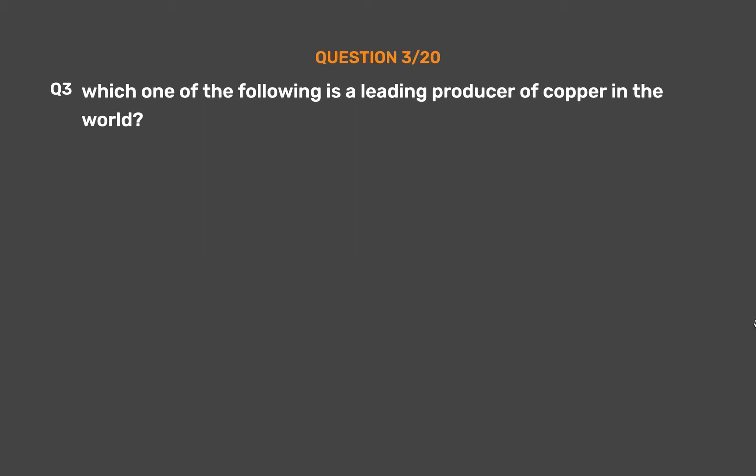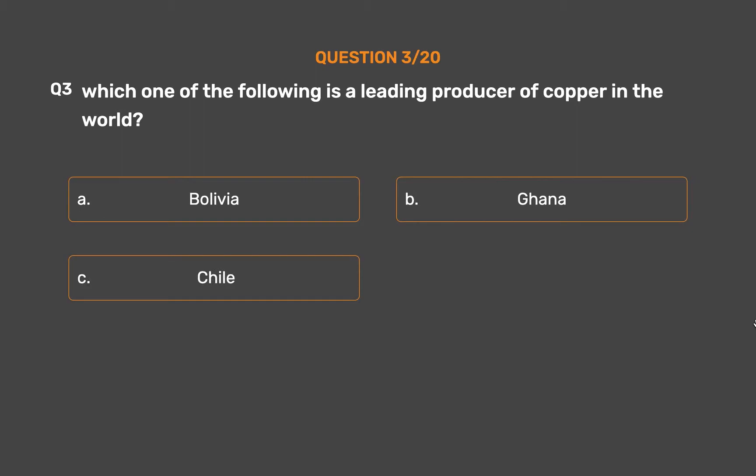Question 3: Which one of the following is a leading producer of copper in the world? Option A: Bolivia. Option B: Ghana. Option C: Chile. Option D: Zimbabwe.